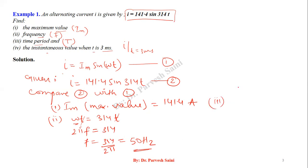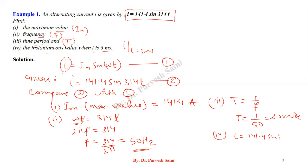The time period T = 1/f = 1/50 = 20 milliseconds. For the instantaneous value at t = 3ms: i = 141.4 sin(314 × 0.003) = 114.35 ampere. We just compare the given alternating quantity with the standard form to extract all parameters.